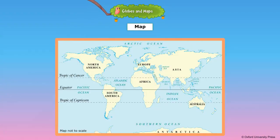A map tells us the exact location of different places in our city. On a larger scale, a world map tells us the location of cities, countries, continents and oceans in the world. A map can be defined as a graphical representation of the Earth's surface drawn to a scale on a sheet of paper.